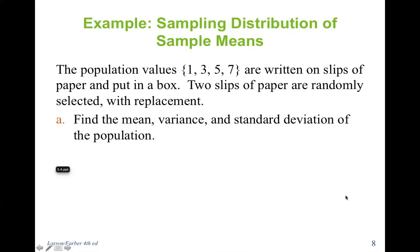For an example, if the population values are 1, 3, 5, and 7, find the mean, variance, and standard deviation of the population. For the mean, you add them up and divide by 4, and you get 4.